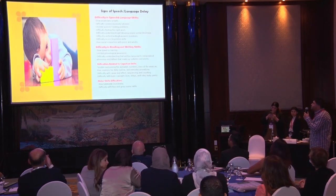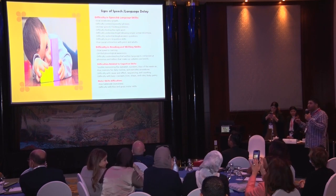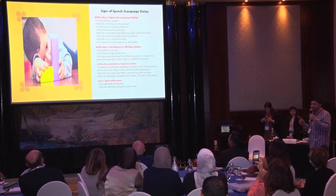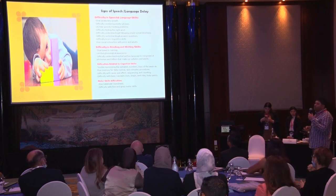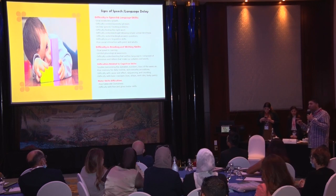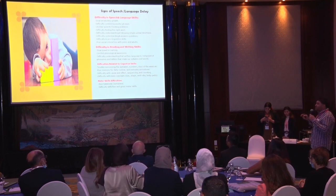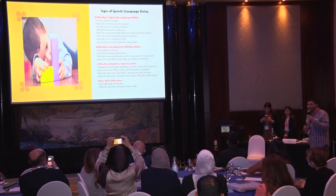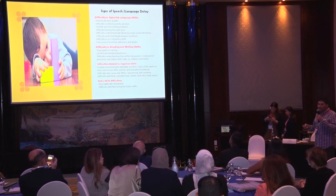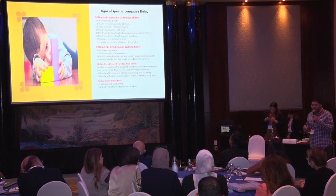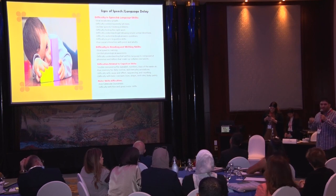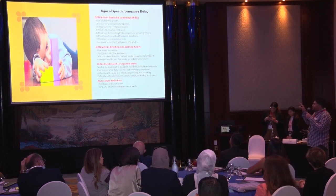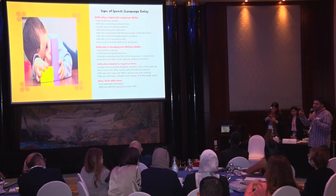Moving to the signs of speech and language delay — these relate to several types of difficulties. The first is difficulty with speech and language skills. A child will show slow vocabulary growth, difficulty combining words into phrases, and difficulty using words in communication. The child may also have unclear speech, which is often related to feeding problems because they share the same speech organs — the tongue, teeth, lips, and cheeks.